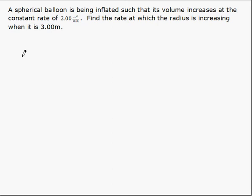We'll start by summarizing the given information. The volume is increasing at a constant rate. That tells us that the rate of change of volume with respect to time, dV/dt—remember related rates we always do with respect to time—is equal to 2.00 cubic meters per minute.